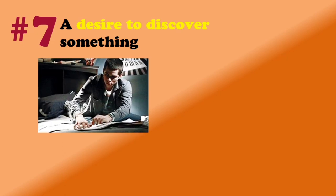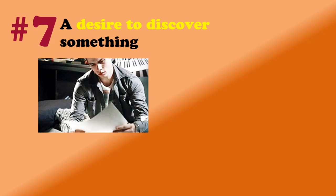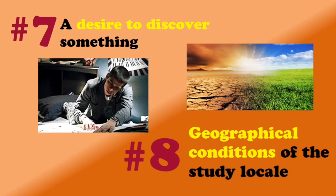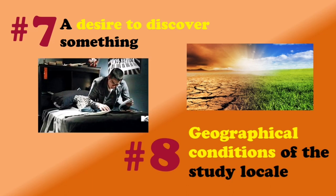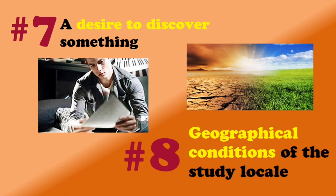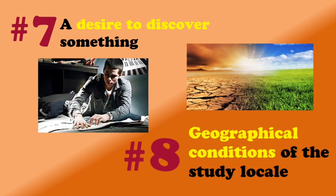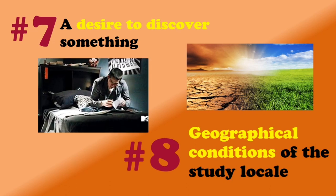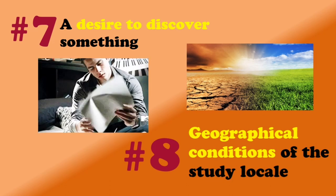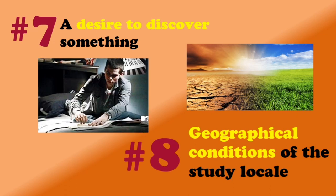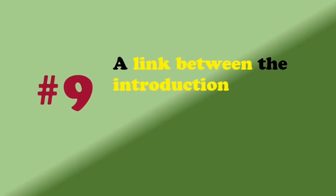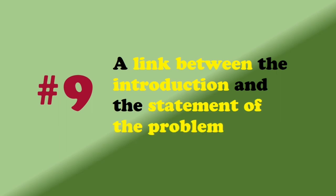Also included in the guidelines is the geographical condition of the locale of your study — what has interested you in that particular locale, why you need to do that research in that area. So you can also mention that geographical location in the background of your study. And, of course, you have to include the transitional phrase that will link your introduction to the statement of the problem as part of the first chapter of your research.